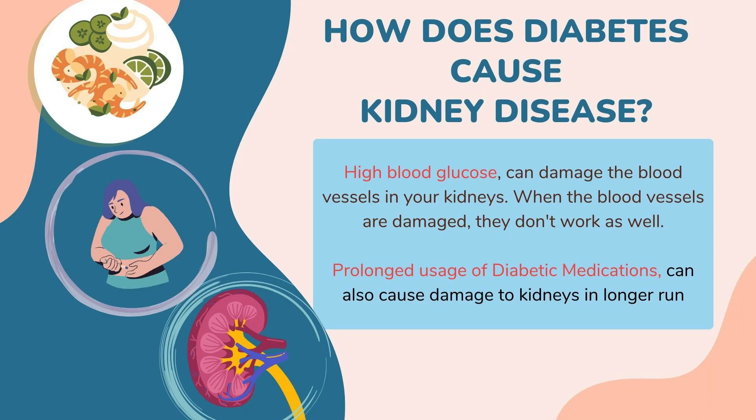A very common effect of diabetes is on our kidneys. This is why diabetes and hypertension are called silent killers — they affect our body organs without us being fully aware. One complication is diabetic nephropathy, where long-term diabetes directly causes harm or damage to our kidneys. Kidney damage is a major complication of uncontrolled diabetes.